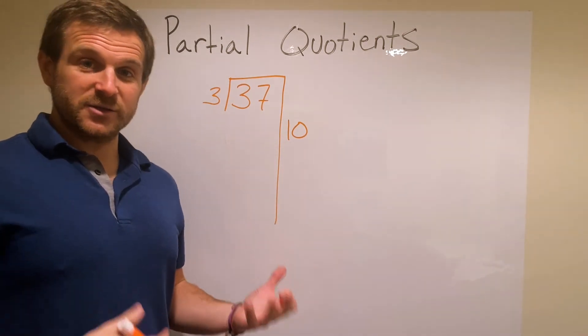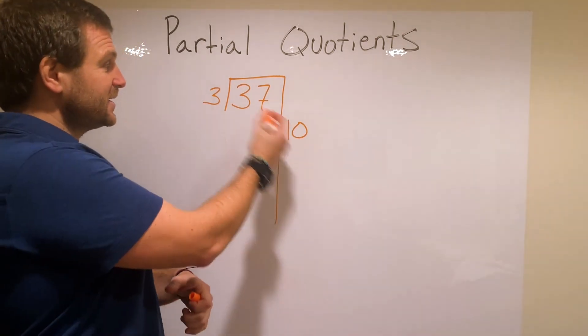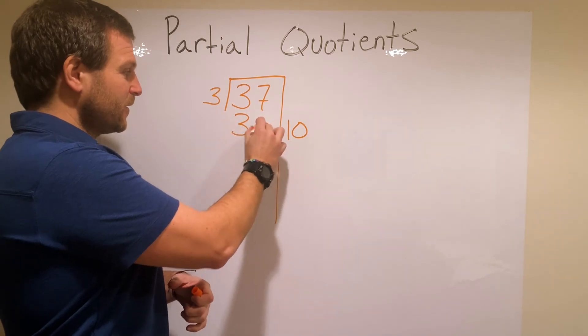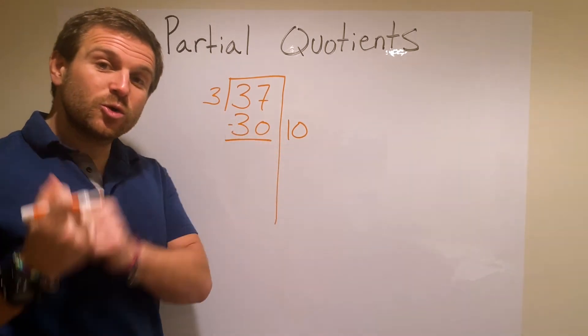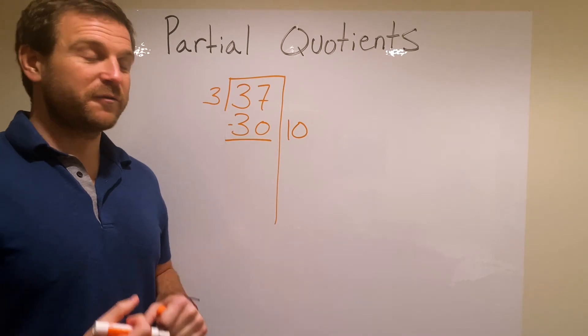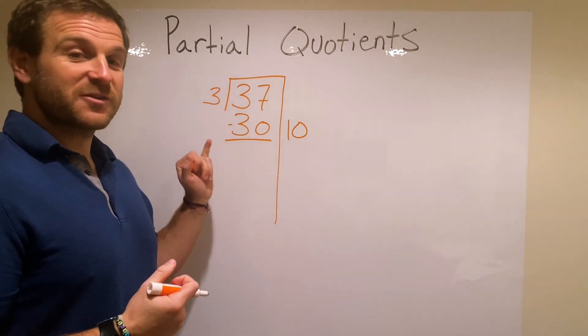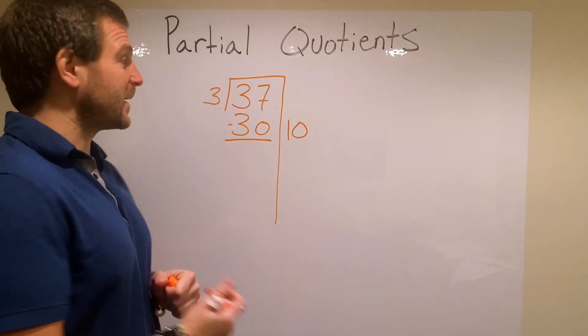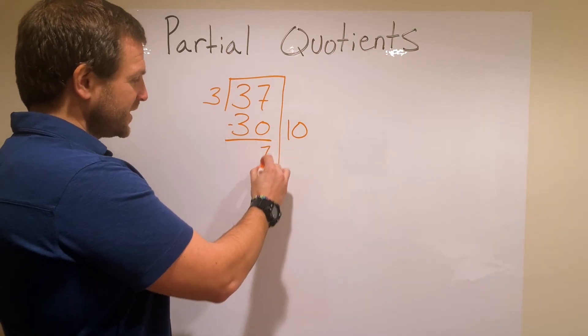Now 10 groups of 3, using our 'groups of' language, 10 groups of 3 is 30. So that takes a huge chunk out of my answer, and that's what I really want to go for because that's going to make me do as few subtraction problems as possible. 37 minus 10 is going to give me 7.